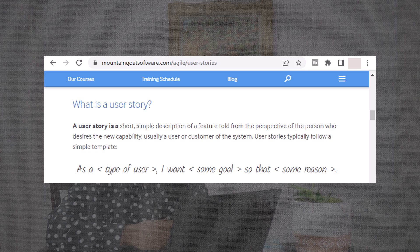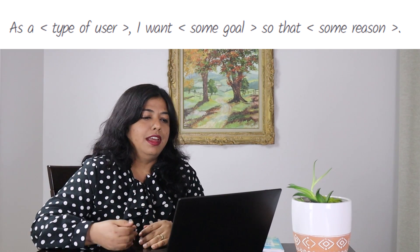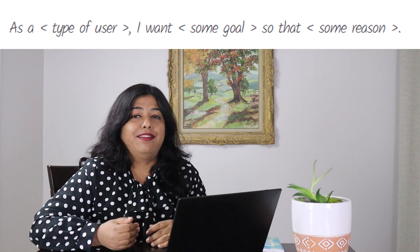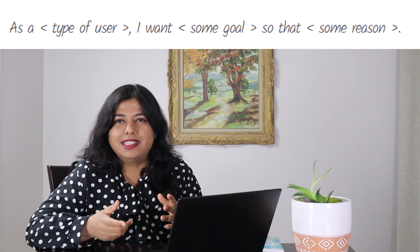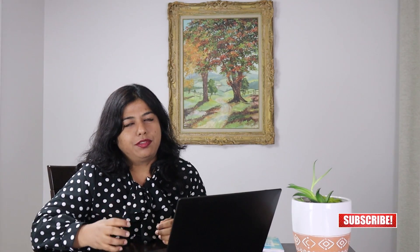User stories typically follow a simple template: 'As a [type of user], I want [some action or feature], so that [some reason or business value].' The reason captures the business value accrued from this capability being developed. Even though there is so much literature and guidance on user stories, remember that not all user stories need to fit the 'as a user' template — you might have stories related to architectural design or a security flaw that don't fit this template but are still user stories, because they represent an idea that offers business value.